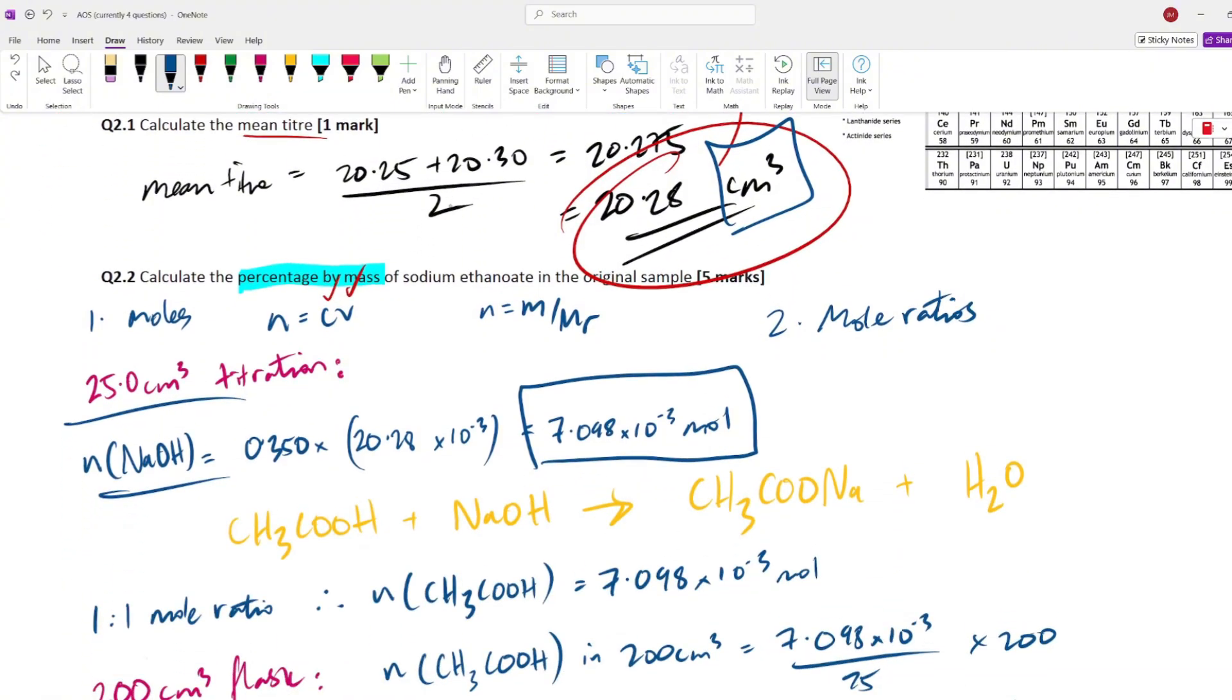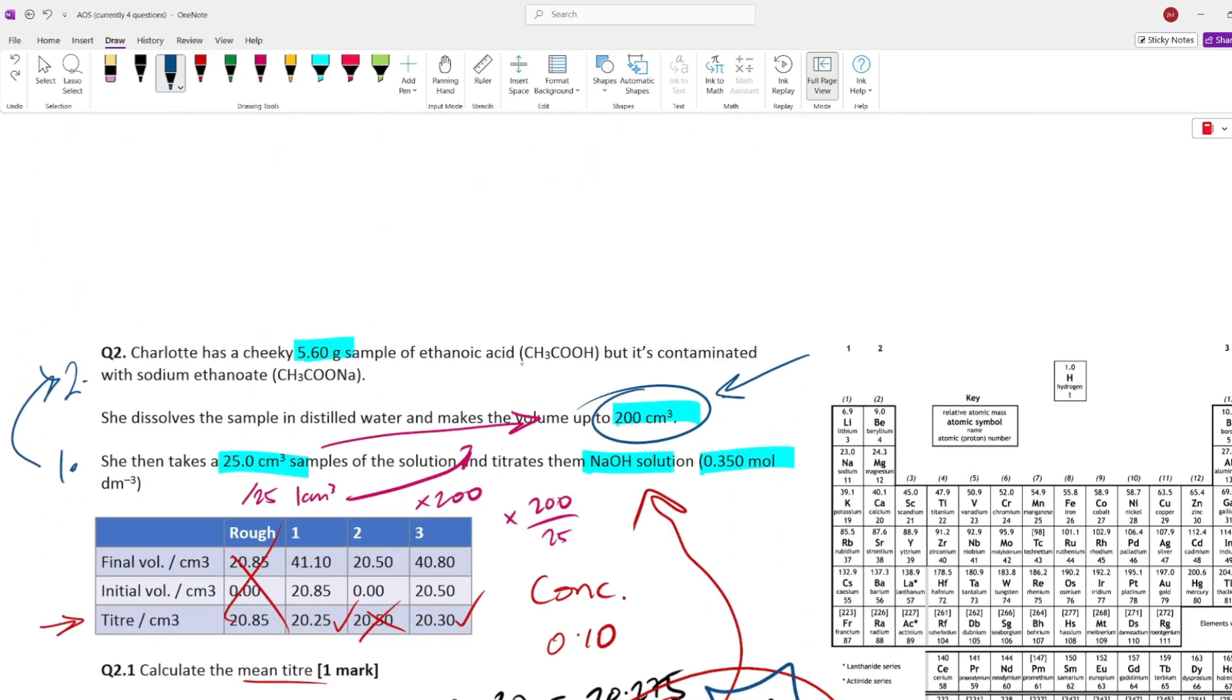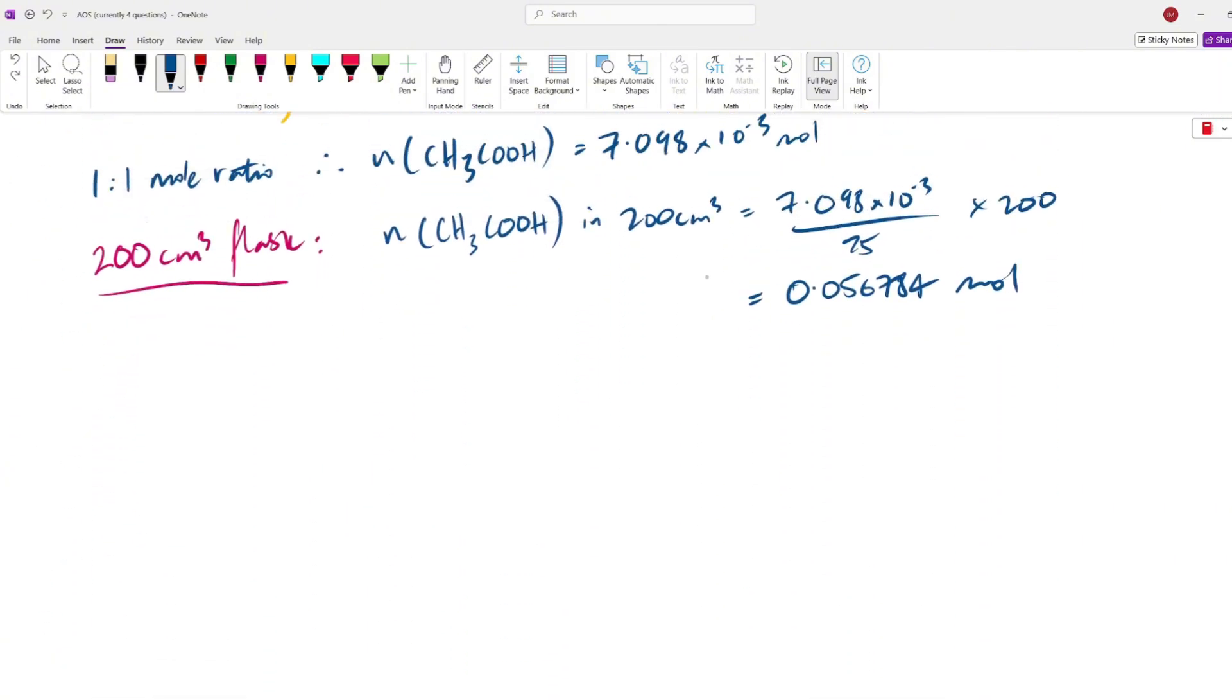All right, so is that our answer? What's going on here? What did the question ask for? Percentage by mass. So, what we have to do for percentage by mass is we have to work out the mass of the ethanoic acid and we have to work out the mass of the impurity. Because that's what they've asked us for. Percentage by mass of the sodium ethanoate, which is the impurity, the contaminant.